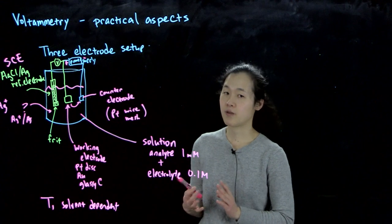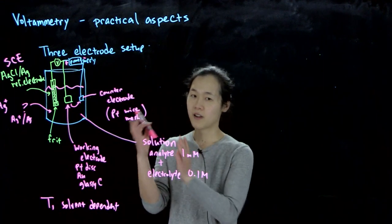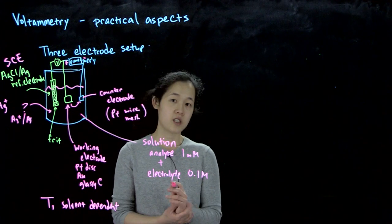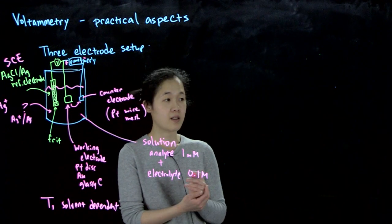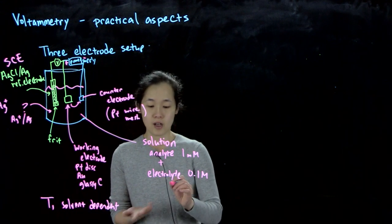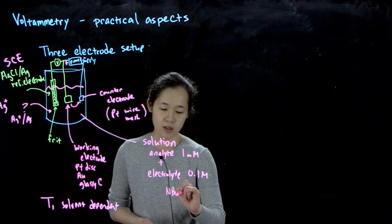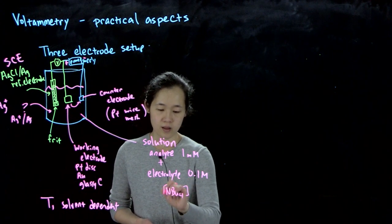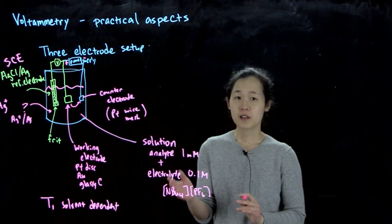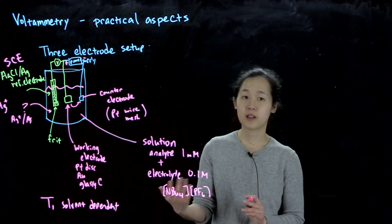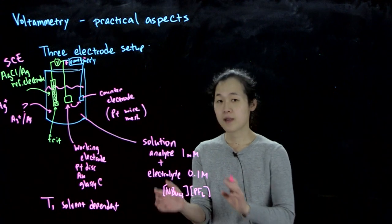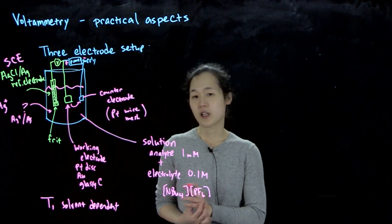By electrolyte, I mean some sort of salt that does not react but lets you maintain your current in order to make everything conductive. For electrolyte, you could use in water any typical salt like sodium chloride. In organic solvents, sometimes you'll do tetrabutyl ammonium hexafluorophosphate, which is soluble enough to dissolve in dichloromethane or THF but is charged and can still conduct charge within your electrolyte.